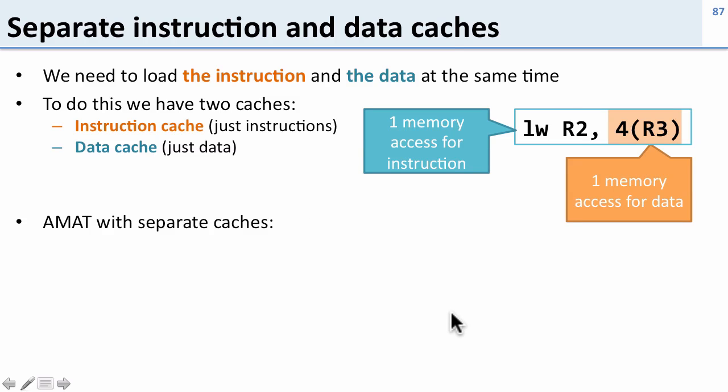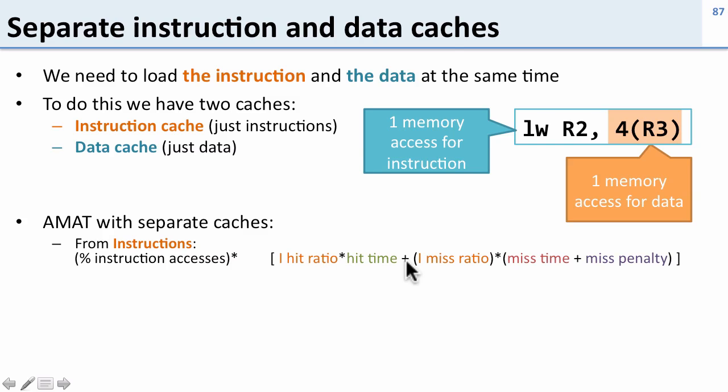So how do we calculate the average memory access time with separate caches? Well we just do one thing for the instructions where this is just the AMAT for the instructions times the percentage of instruction accesses. And we do it for data as well, so the percentage of data accesses times the data information.